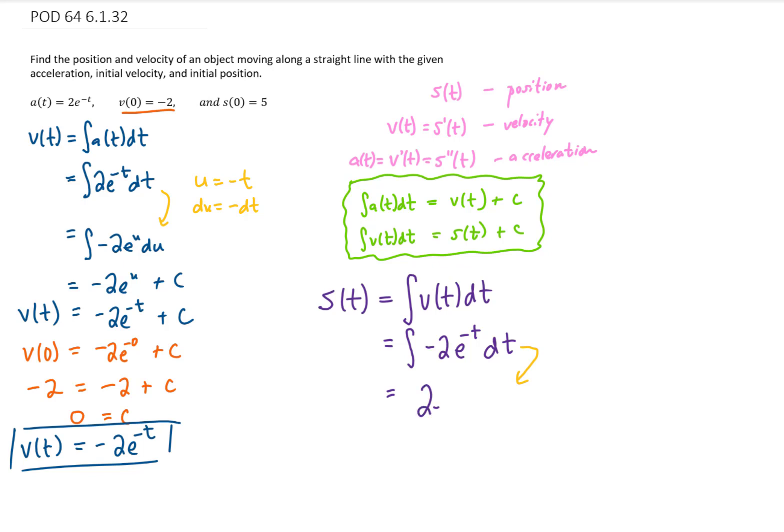This integral is going to be exactly the same as the integral from the previous part of this problem. We're just going to get 2e^(-t), and the extra negative that comes out of doing this integral will cancel with this negative. Tack a plus c, I'll call it c1, onto the end of that, so as not to confuse it with the previous c, and we have ourselves a position function.